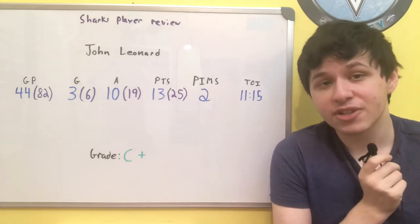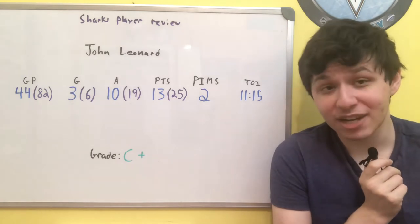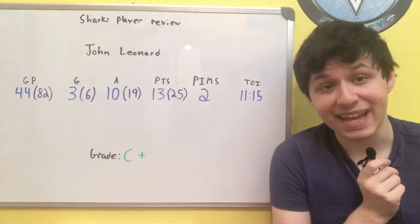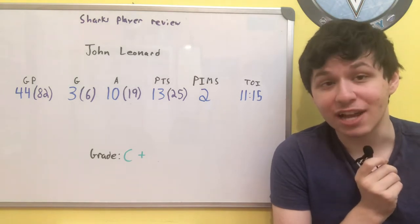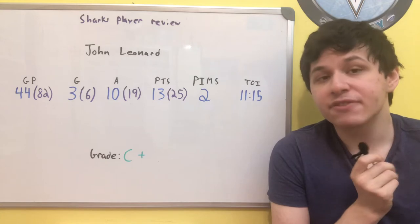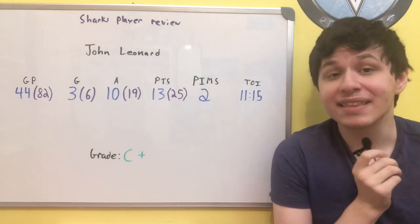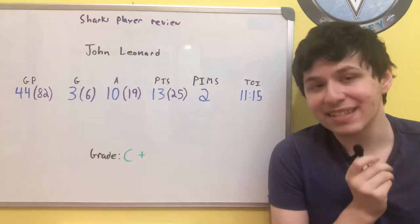Now down to the players who have been slightly better than what was necessarily expected, and one of those players is of course forward John Leonard. He was a 6th round pick just a few years ago in the 2018 entry draft, but in the previous year at his college he actually did exceptionally well, which gave some Sharks fans hope that he could crack the NHL roster in the following season, which was of course this year, and that's exactly what happened.